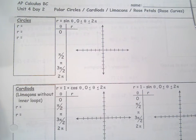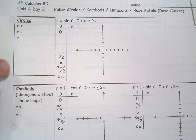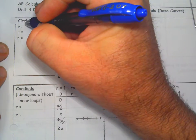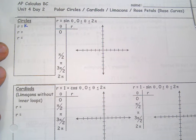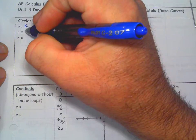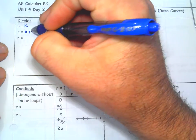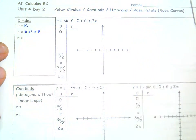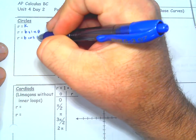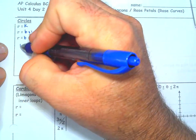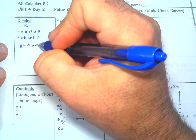First, we'll talk about are circles. Circles can just be r equals k, where k is a constant number. But that would just be a circle centered about the origin with a constant radius, which you probably won't run into often. More commonly, it's going to be some number times sine theta, or some number times cosine theta. And b is going to actually equal the diameter of the circle.